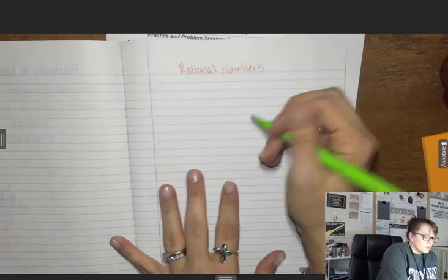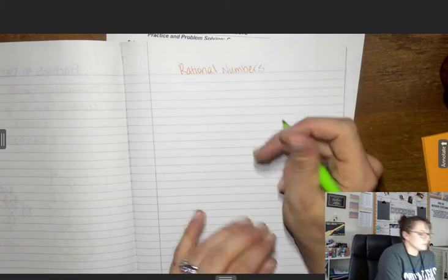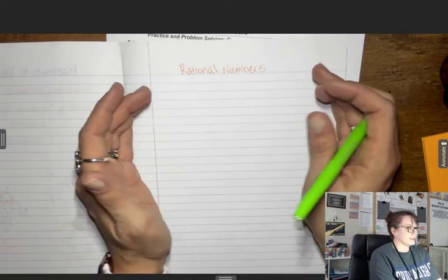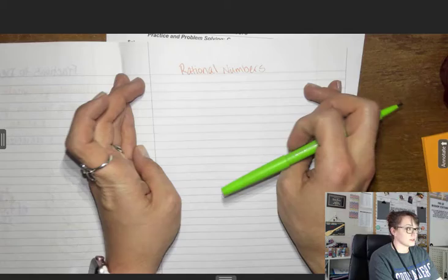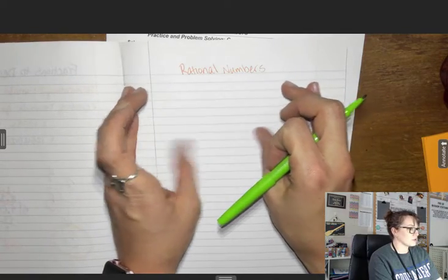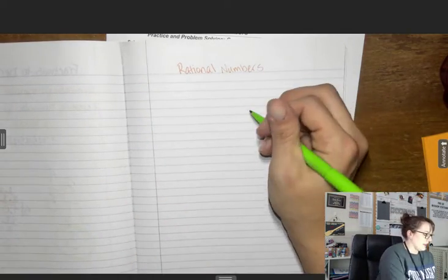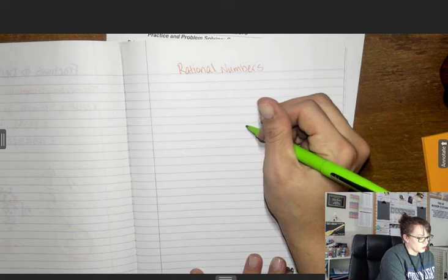Alright, I am going to draw. Don't draw big, start pretty small because you're going to need four different ones. Second period ran out of space because they drew too big.